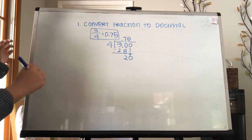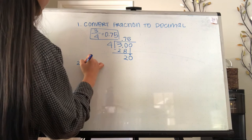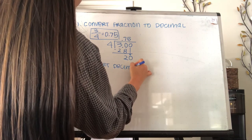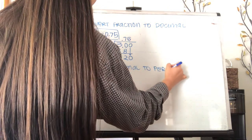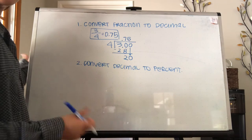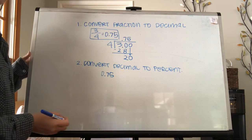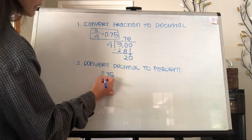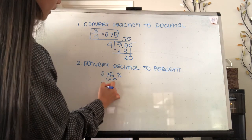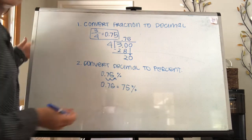The next step to convert fractions to percents: once you get the decimal, you're going to make the decimal into a percent. Converting decimals to percents is fairly simple — take 0.75, move the decimal point two spaces to the right, and then add a percent sign. So 0.75 is the same as 75%. And that's how you do it.